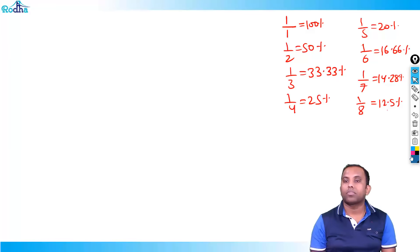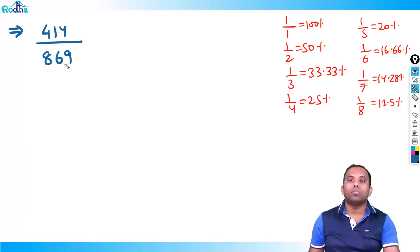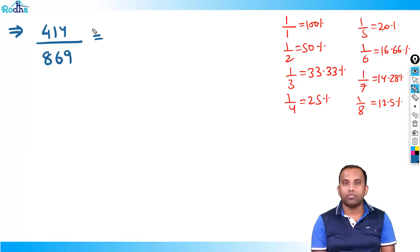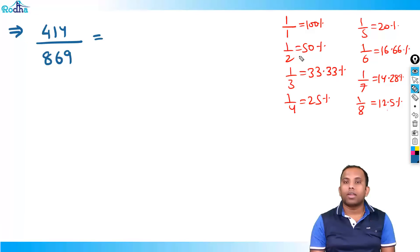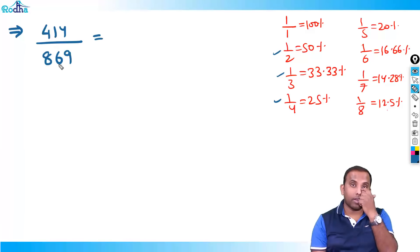Now take another example: 414 upon 869. What is the percentage value? This means 414 is what percent of 869. Again, first search: is it close to half, one third, one fourth? You can see it's 800-something over 400-something, so it's around half.